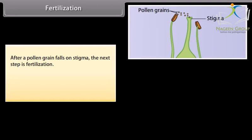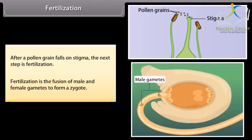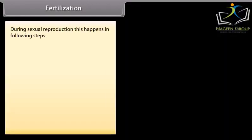Fertilization. After a pollen grain falls on stigma, the next step is fertilization. Fertilization is the fusion of male and female gametes to form a zygote. During sexual reproduction, this happens in following steps.